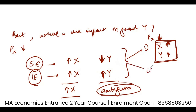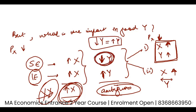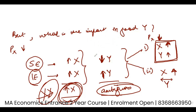The second scenario is that when the price of good X decreases, consumption of good X increases, but consumption of good Y remains constant. This means the decrease in Y from the substitution effect was equal in magnitude to the increase in Y from the income effect. Because the two magnitudes were the same, the net result is that Y stays constant.